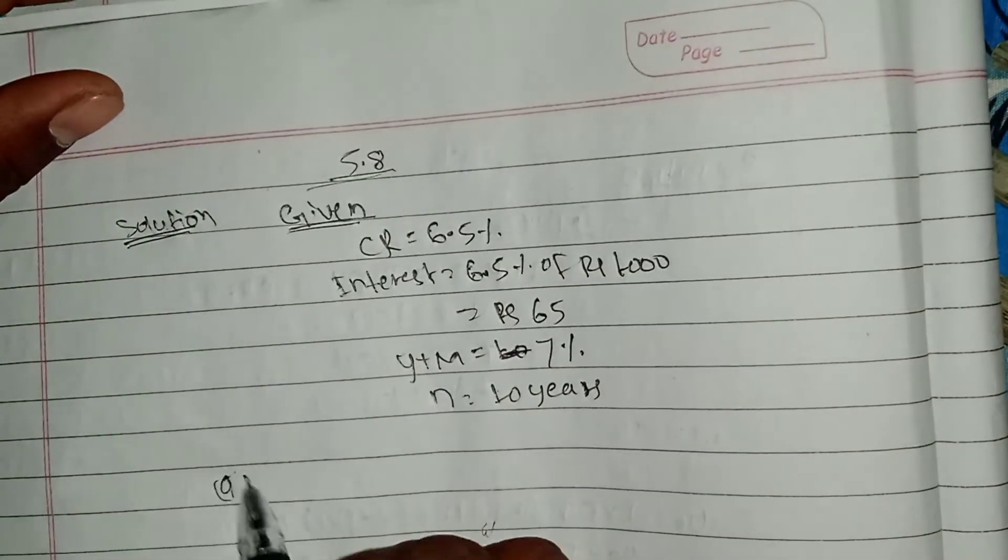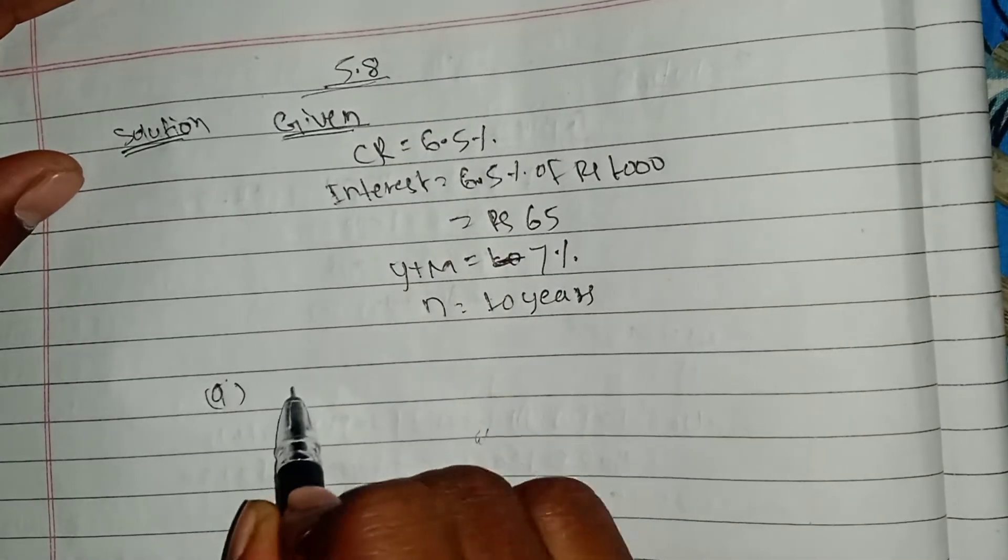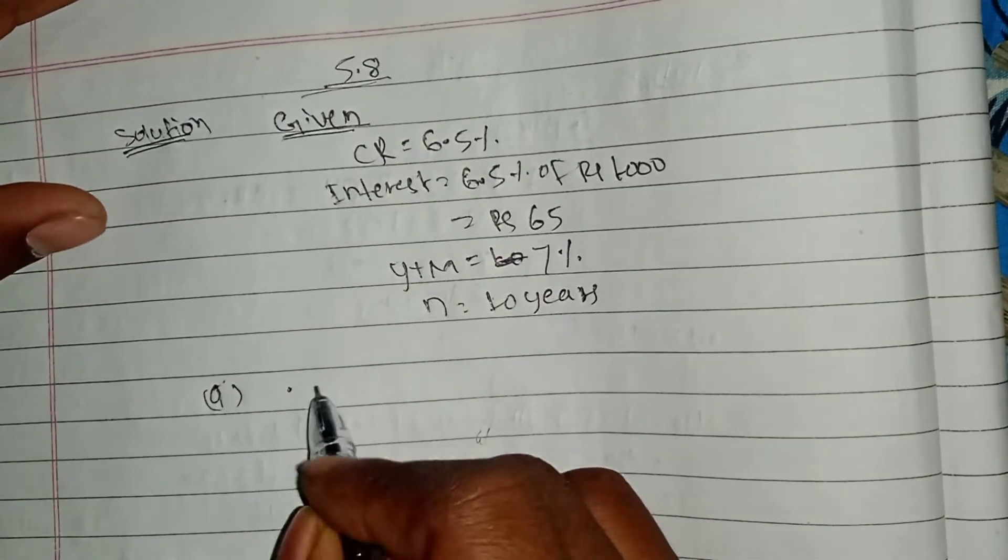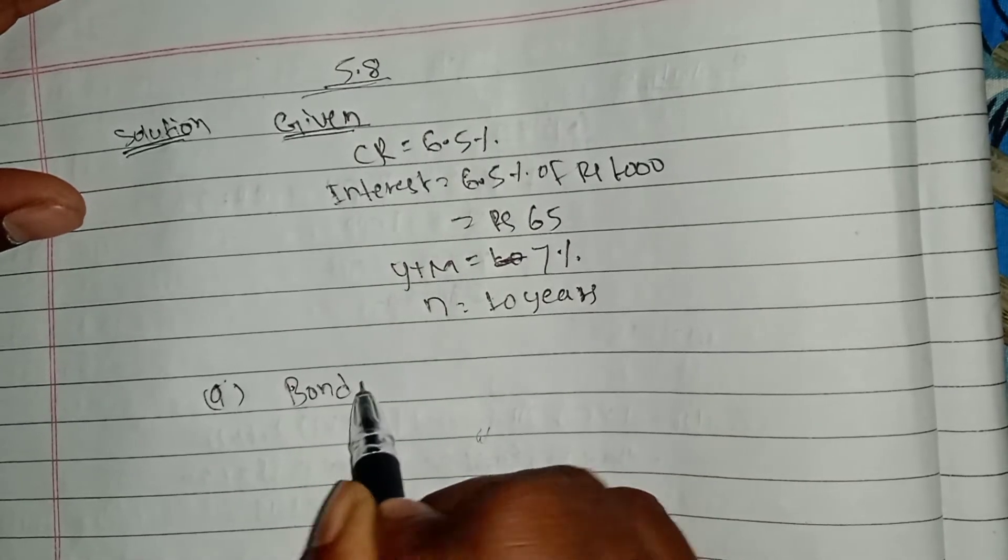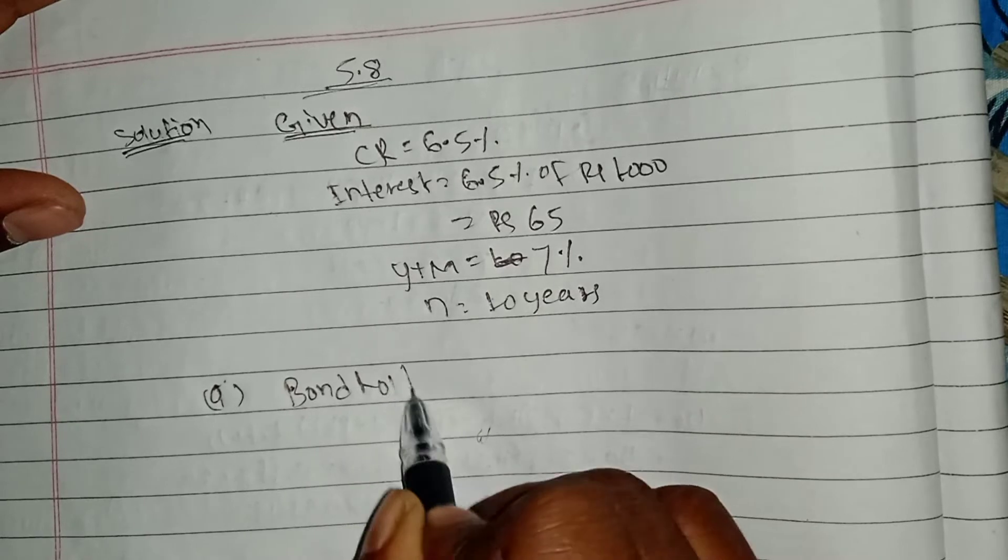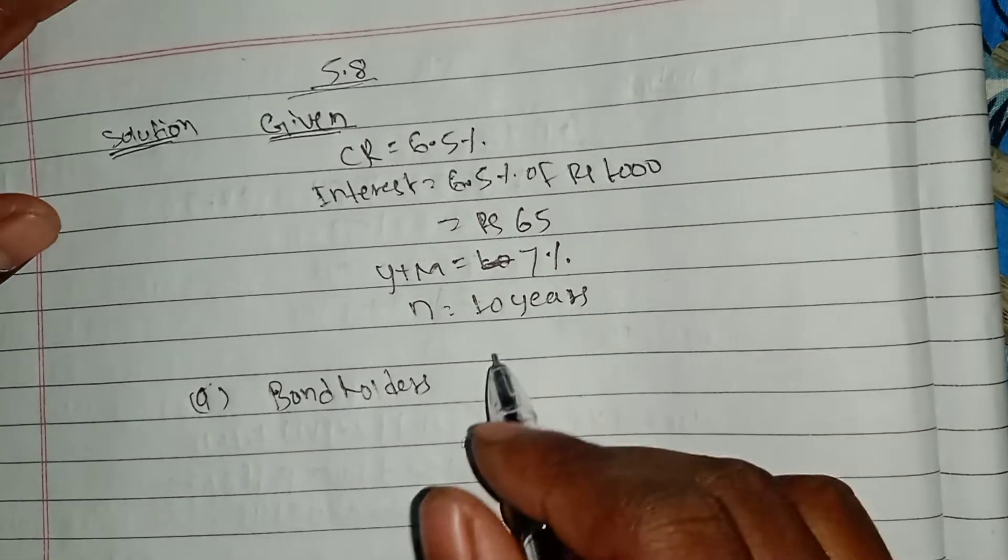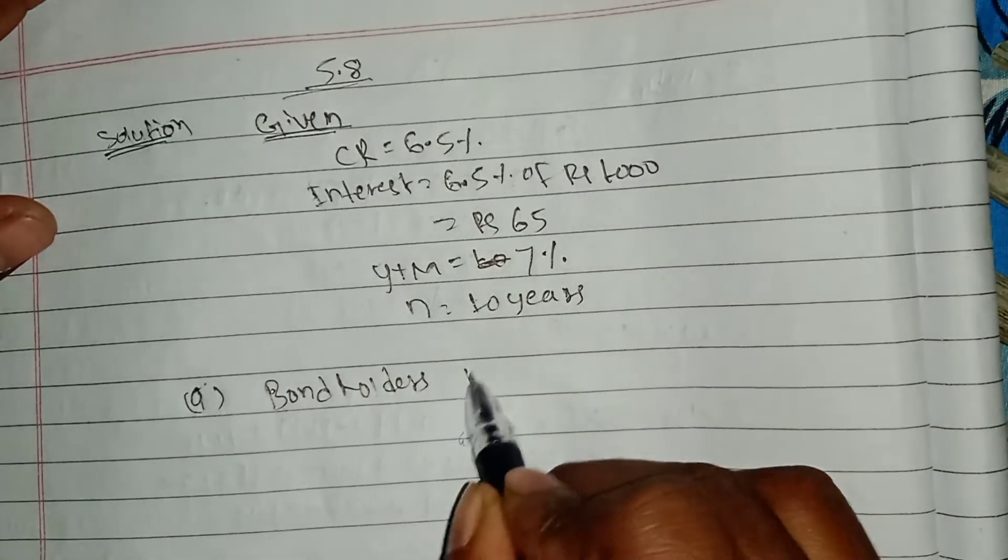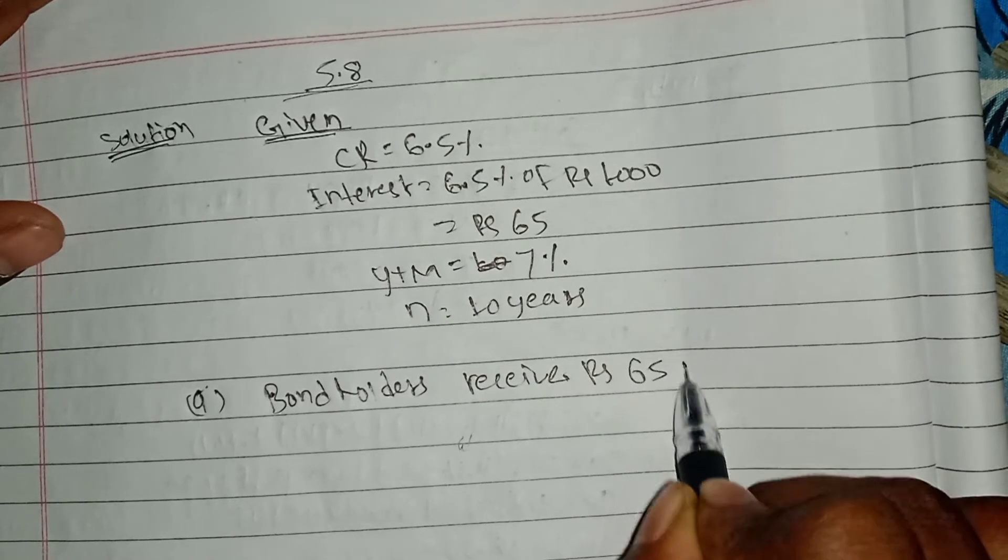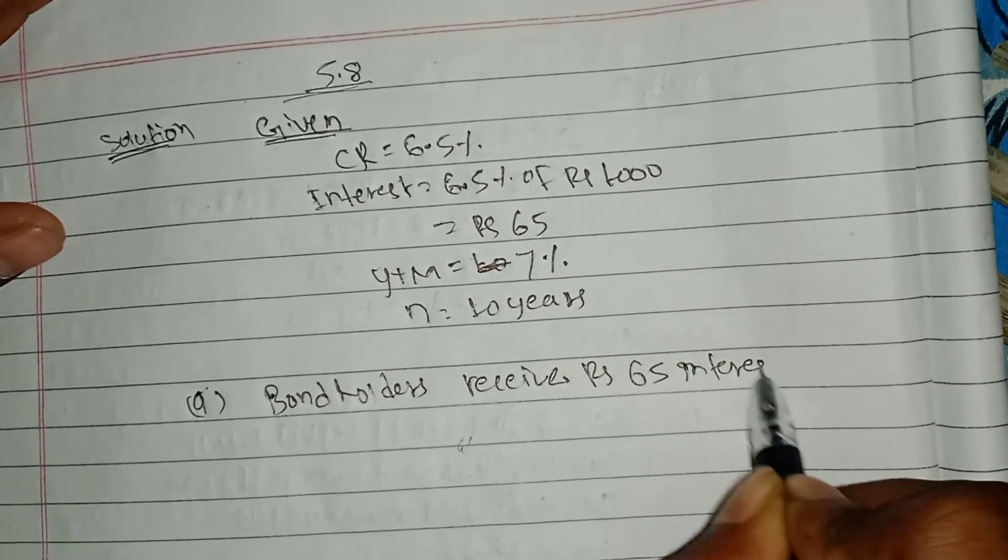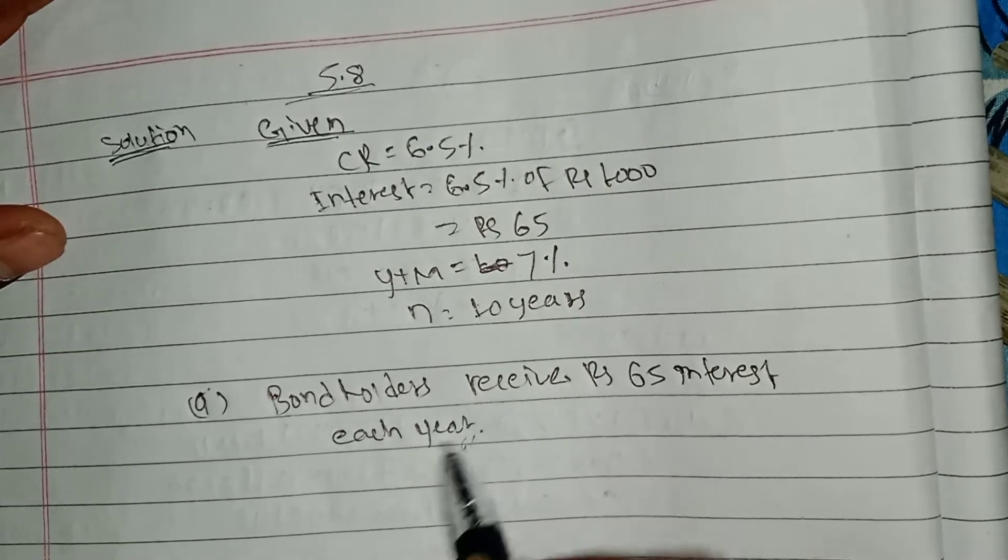Let me write the first answer. For part A, interest that bondholders receive: bondholders receive 65 rupees as interest payment each year.